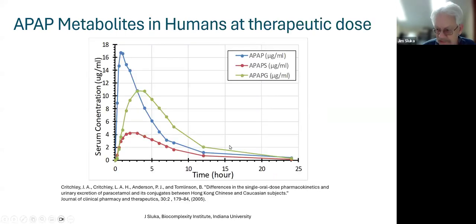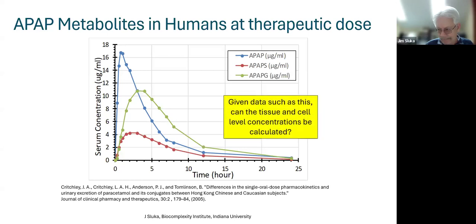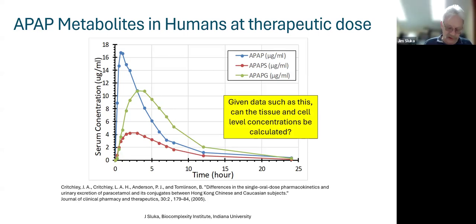In humans, this is ADME data — concentration versus time for acetaminophen itself after a single oral dose, with the sulfate in red and the glucuronide in green. Almost no acetaminophen is cleared through the urine; what's found in the urine is the sulfate and glucuronide. This is the kind of high-level coarse-grain data you would have in a clinical setting. Can we use this data to make predictions down at the level of the organ of interest — in this case, the liver?